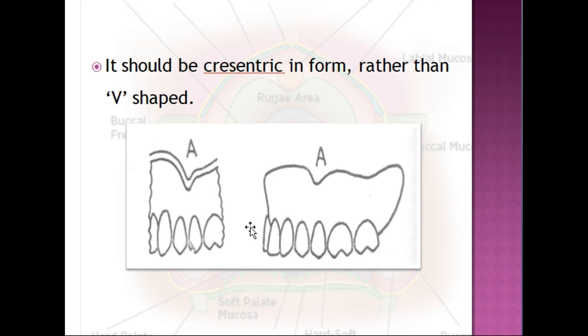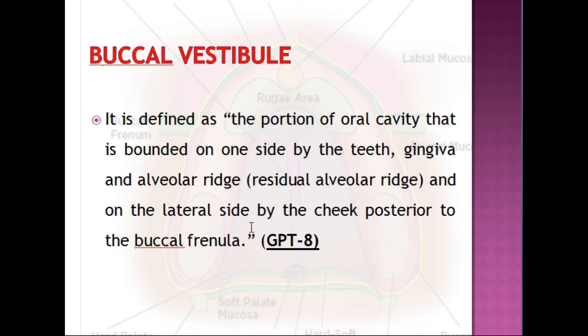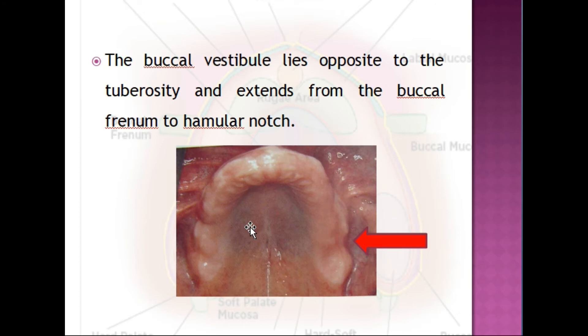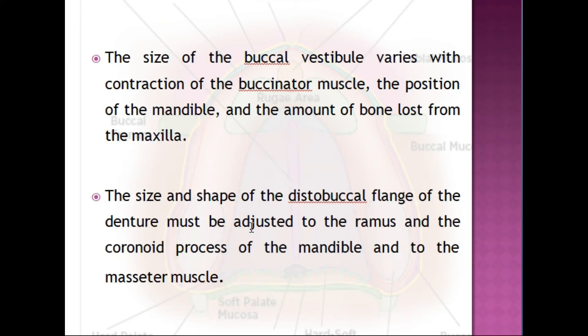The buccal vestibule is defined as the portion of the oral cavity bounded on one side by the teeth, gingiva, and alveolar ridge, and on the lateral side by the cheek, posterior to the buccal frenula. The buccal vestibule lies opposite to the tuberosity and extends from the buccal frenum to the hamular notch. The size of the buccal vestibule varies with contraction of the buccinator muscle, the position of the mandible, and the amount of bone loss from the maxilla.